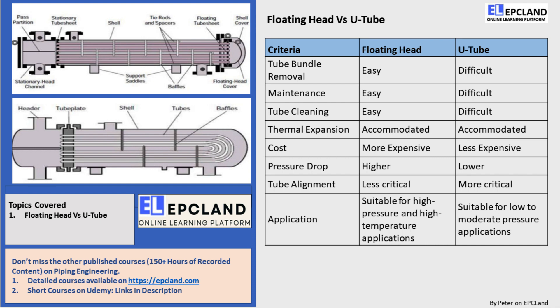Now, let's move on to the U-tube heat exchanger. This type of heat exchanger is less expensive and has a lower pressure drop compared to the floating head heat exchanger. However, maintenance and tube cleaning can be a bit difficult. It's also not suitable for high pressure and high temperature applications. Additionally, tube alignment is more critical in U-tube heat exchangers.